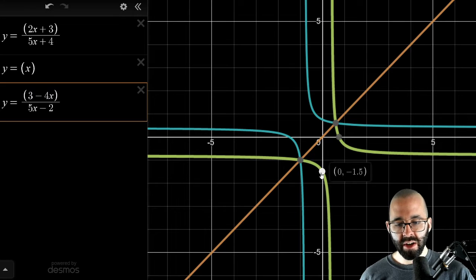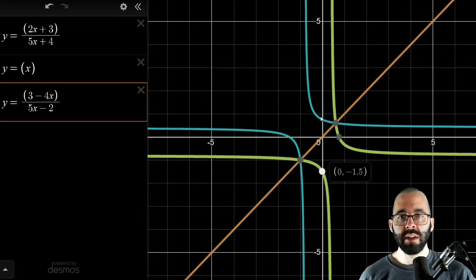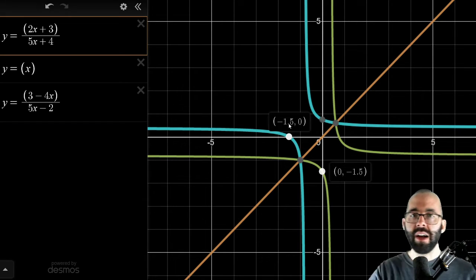If we look at any point on the green, switch the inputs and the outputs, negative one point five comma zero would also be on the blue graph.